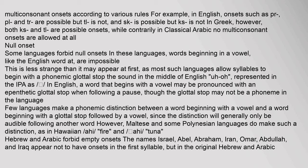Some languages forbid null onsets. In these languages, words beginning in a vowel, like the English word 'at,' are impossible. Most such languages allow syllables to begin with a phonemic glottal stop. In English, a word that begins with a vowel may be pronounced with an epenthetic glottal stop when following a pause, though the glottal stop may not be a phoneme in the language. Few languages make a phonemic distinction between a word beginning with a vowel and one beginning with a glottal stop followed by a vowel.